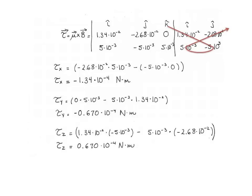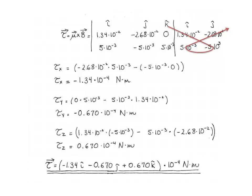Finally, for the z-component of the torque: 1.34 times 10 to the negative 2 times negative 5 times 10 to the negative 3 minus 5 times 10 to the negative 3 times negative 2.68 times 10 to the negative 2, giving 0.670 times 10 to the negative 4 newton·meters. This gives us all three components of the net torque in that three-dimensional magnetic field.